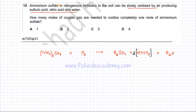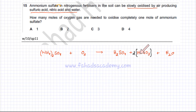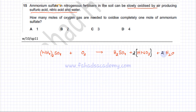Next, balance hydrogen. There are eight hydrogens on the left-hand side. On the right, there are two from H₂SO₄ and two from 2HNO₃, giving four accounted for. So we need four more hydrogens from water, meaning two water molecules (2H₂O).